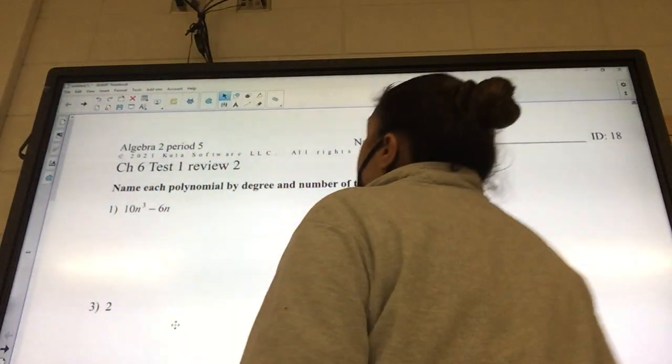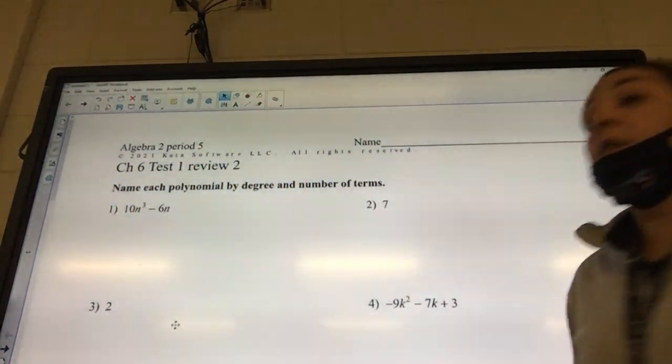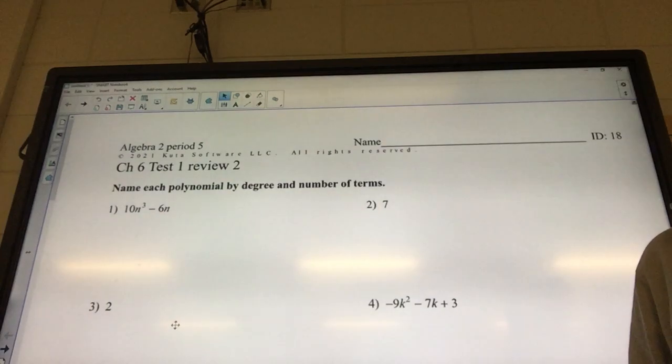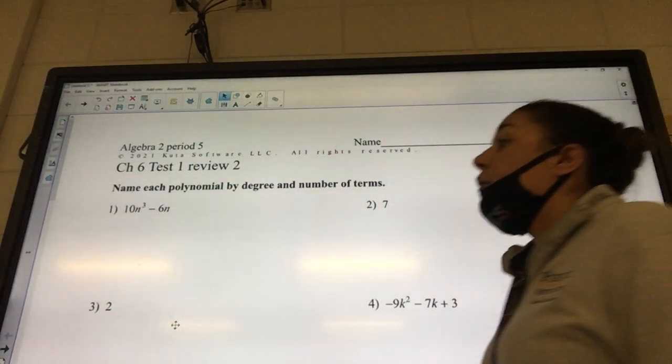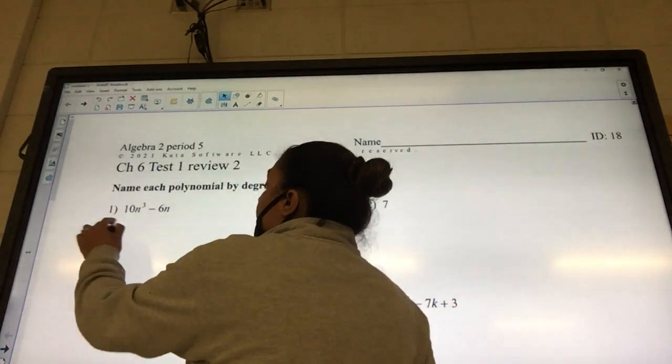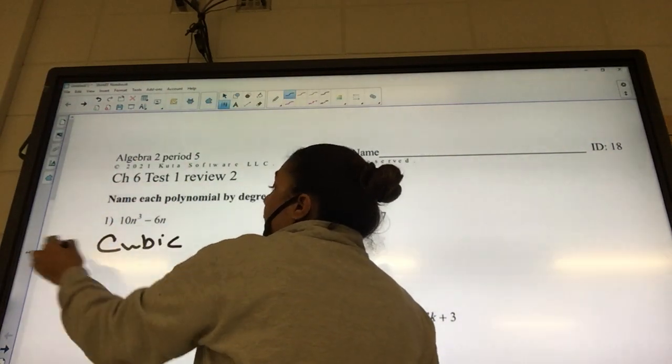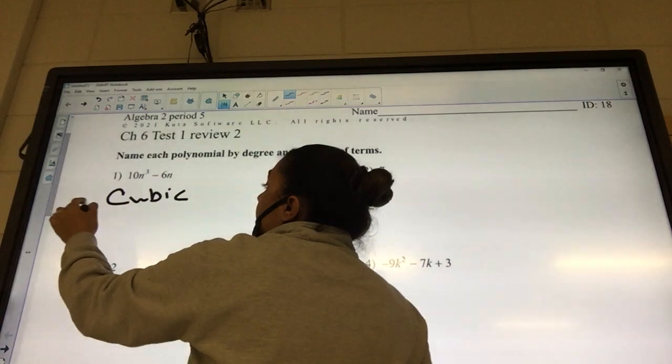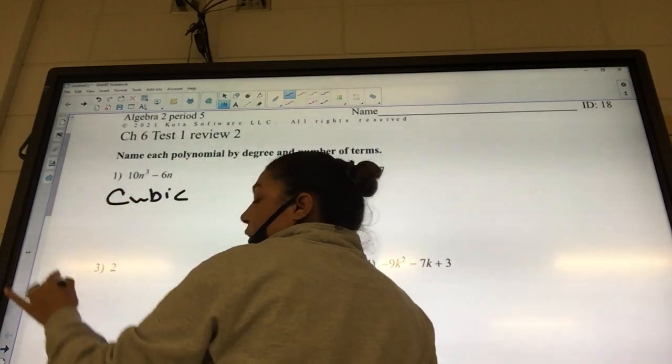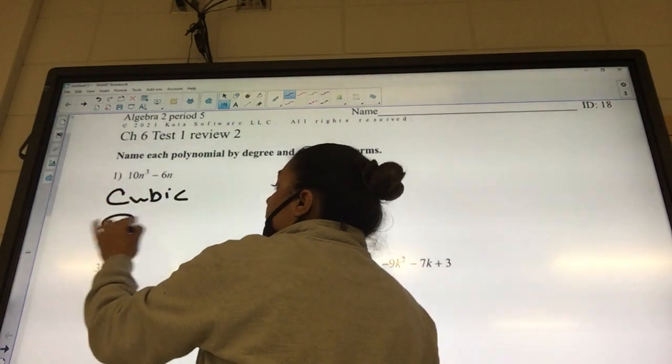Okay, so name each polynomial by degree and number of terms. What is the highest degree of this polynomial? Three, so it's going to be a cubic. And then how many pieces are there? Two, so it's binomial.